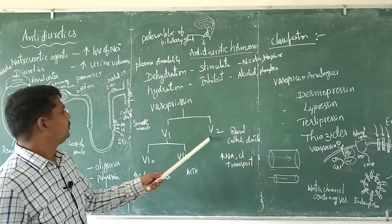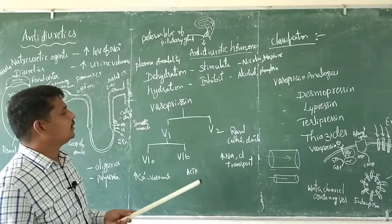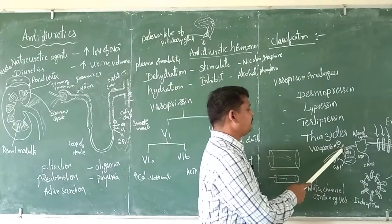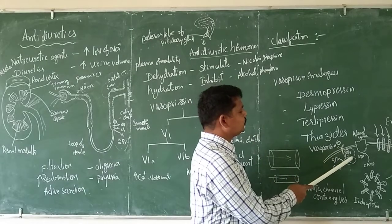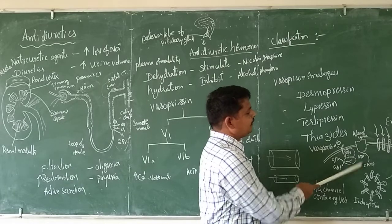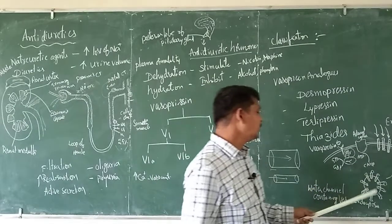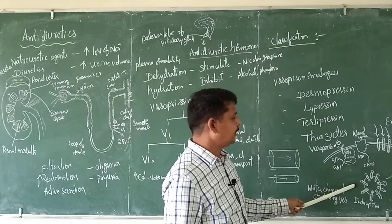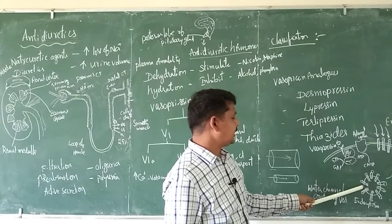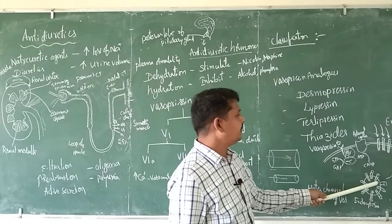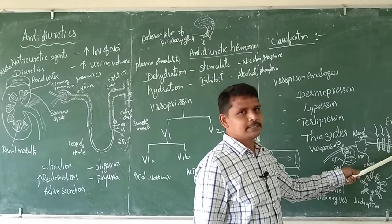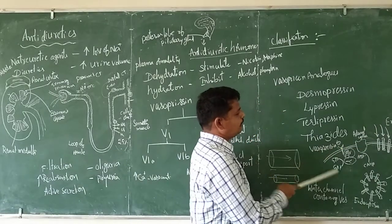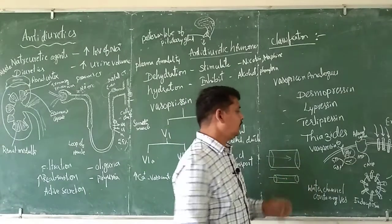Next, V2 receptors. V2 receptors are present in the collecting ducts. When vasopressin binds to these V2 receptors, there is activation of adenylyl cyclase and cyclic AMP is activated. The cyclic AMP then causes aquaporin water channel-containing vesicles inside the cell to be activated, and these undergo exocytosis — they are expressed on the cell membrane. Water then flushes into the cell through these channels. When the receptor binding is done, they are normally internalized back into the cell.